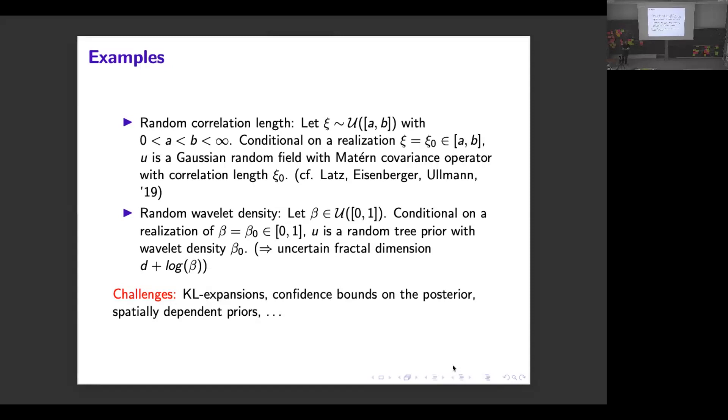However, this of course brings certain difficulties. For instance, if you consider the KL approximation of a Gaussian random field, how do you actually calculate it if your correlation length is random? Because then you would have to recalculate the eigenvalues for each realization, which is clearly not tractable. So you have to use some interpolation approaches there. Another thing which might be hard is to actually derive some valid confidence bounds on this posterior that you obtain.